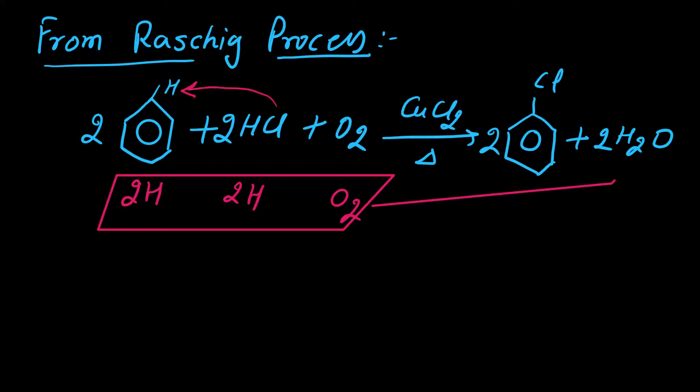Summary: Haloarenes की preparation — halogenation of benzene से, iodination benzene की करते हैं, benzene diazonium chloride से starting material लेके Sandmeyer reaction, Gattermann reaction, Balz-Schiemann reaction से haloarenes की preparation करते हैं। और lastly Hunsdiecker reaction और Raschig process से chlorobenzene को prepare करना सीखा। Thank you।